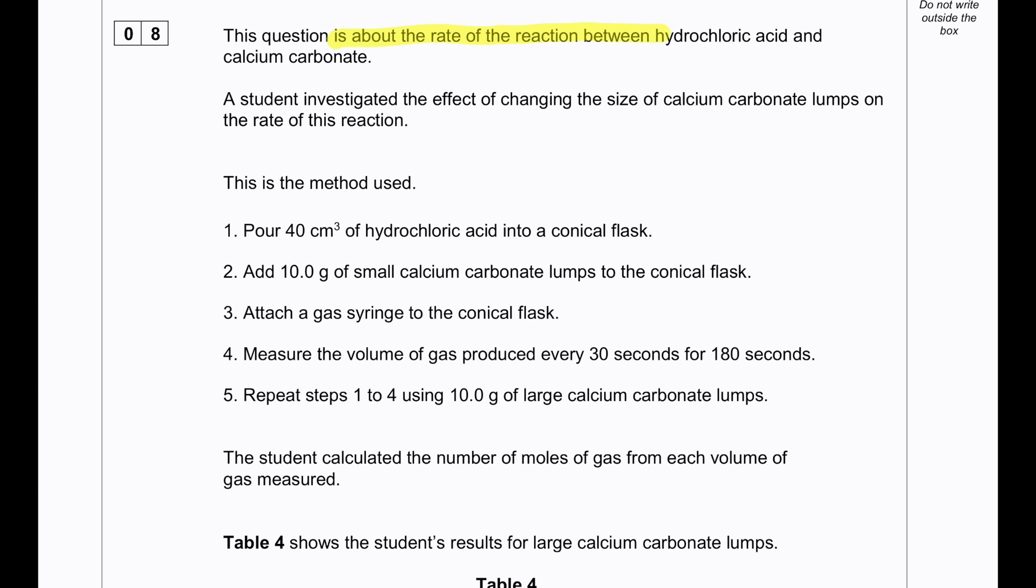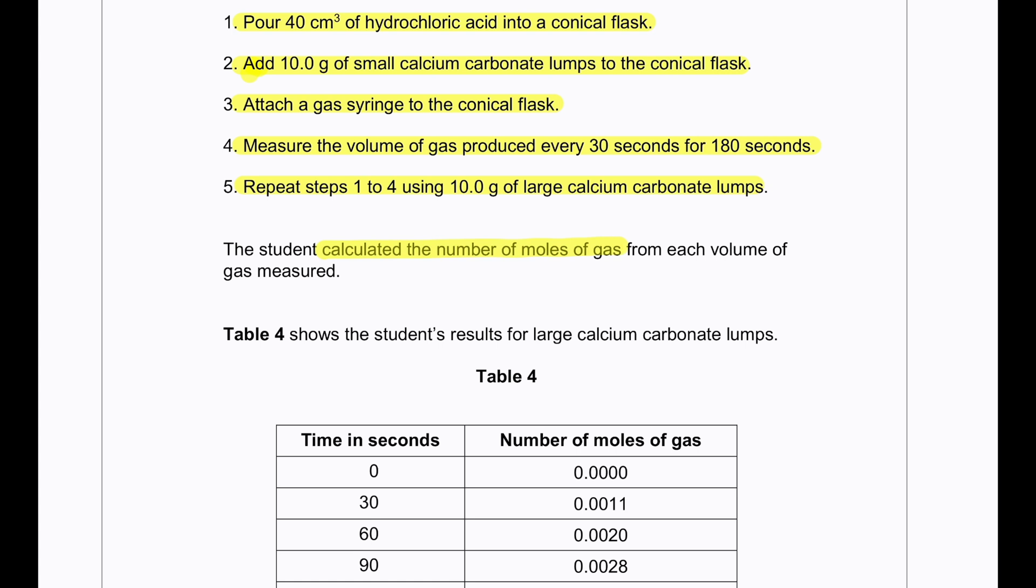This question is about the rate of the reaction between hydrochloric acid and calcium carbonate. A student investigated the effect of changing the size of calcium carbonate lumps on the rate of this reaction. This is the method used: Pour 40 cm cubed of hydrochloric acid into a conical flask. Add 10 grams of small calcium carbonate lumps to the conical flask. Attach a gas syringe to the conical flask. Measure the volume of gas produced every 30 seconds for 180 seconds. Repeat steps 1 to 4 using 10 grams of large calcium carbonate lumps.